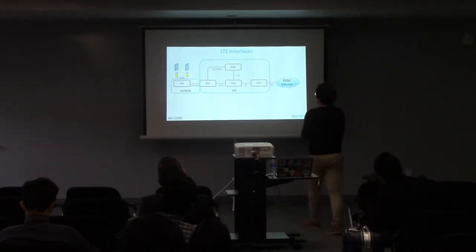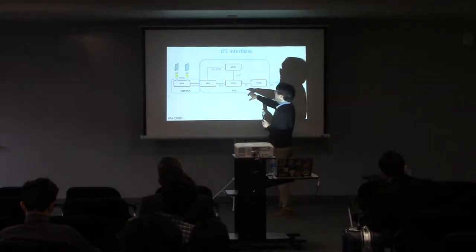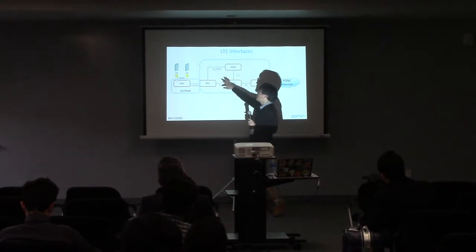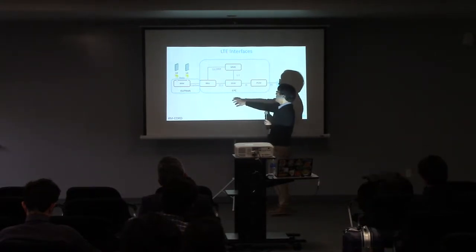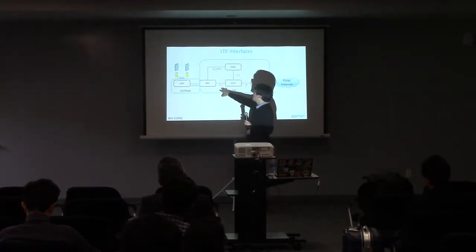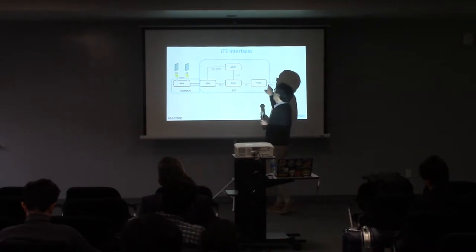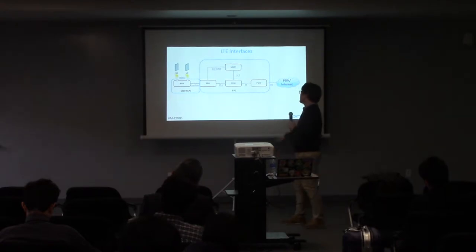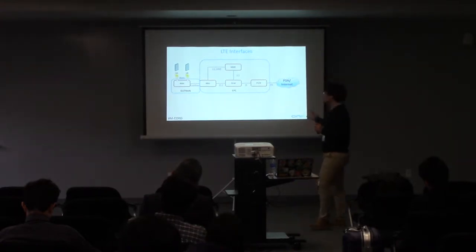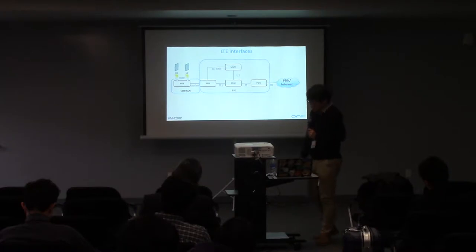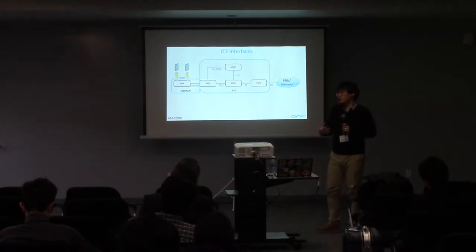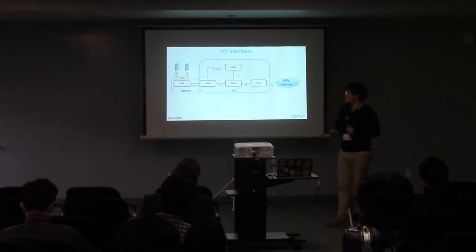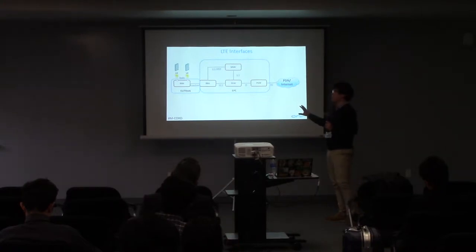For BBU and MME, the LTE specification defines the S1 MME interface. For the three links — S11, S5, and SGI — the LTE specification defines those interfaces respectively. So let's think about how to define and make each interface in the mCORD part.